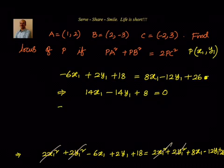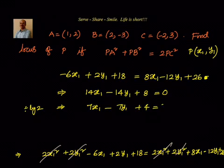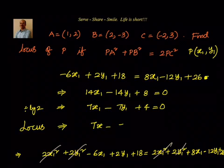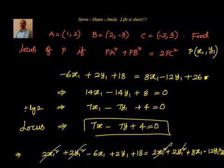Now we can take 2 as common. Dividing by 2, we have 7x1 minus 7y1 plus 4 equals 0. So the locus will be, replacing x1 and y1 with x and y: 7x minus 7y plus 4 equals 0. That is the locus of point P, which moves such that PA square plus PB square equals 2PC square. We will do some more problems in the coming sessions.